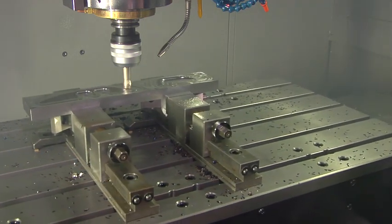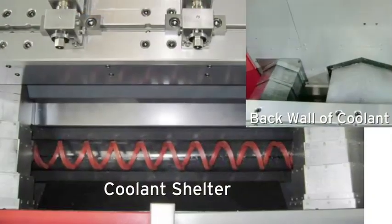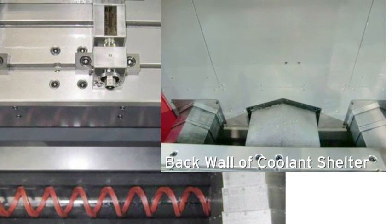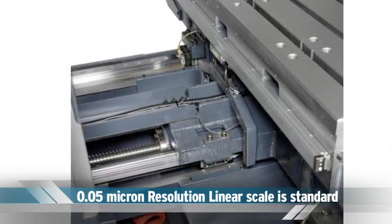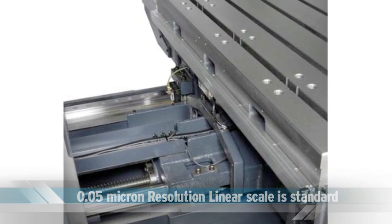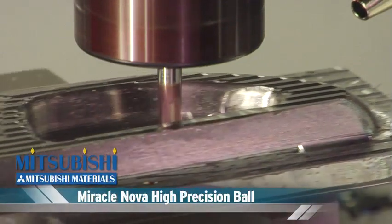Cutting chips and coolant often affect the thermal displacement of machining centers. Our coolant shelter prevents the casting from being exposed to either, providing optimal performance. Additionally, standard equipment like the 0.05 micron scale feedback linear scale enhances the positioning accuracy through all possible applications.